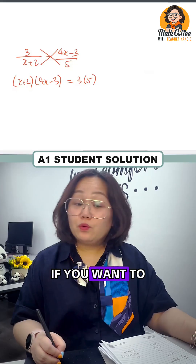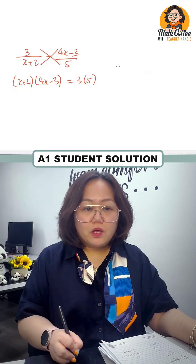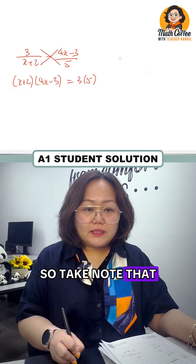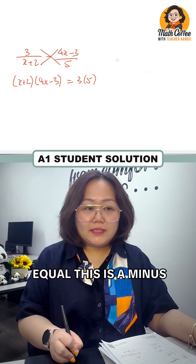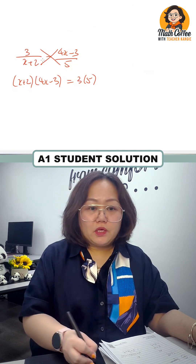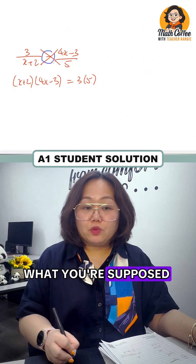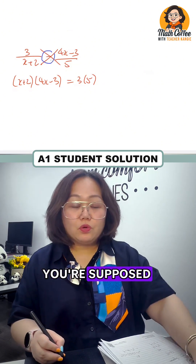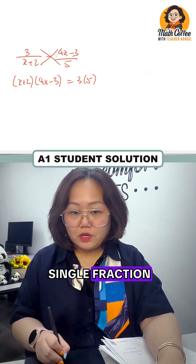If you want to get A1, here is what you should do. Take note that this is not equal — this is a minus. When it's a minus, what you're supposed to do is combine it into a single fraction.